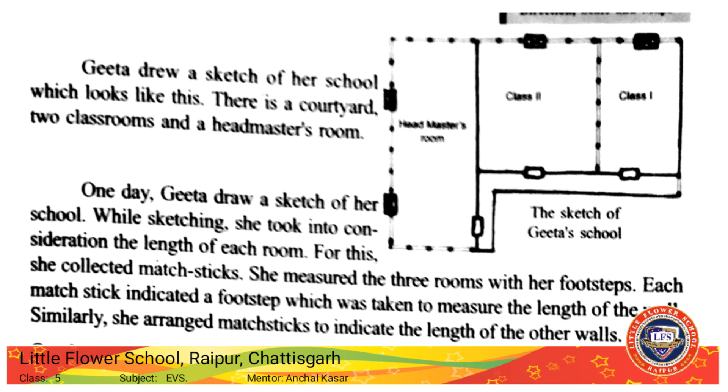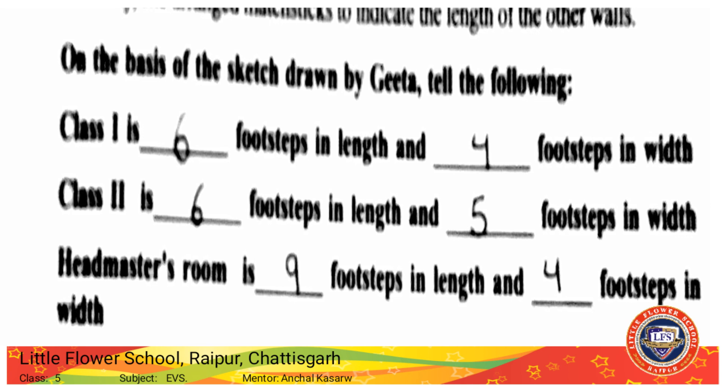Carefully see the sketch and the matchsticks. On the basis of the sketch, note the following: Class 1 is 6 footsteps in length and 4 footsteps in width. Class 2 is 6 footsteps in length and 5 footsteps in width. The headmaster's room is 9 footsteps in length and 4 footsteps in width. We get these footstep counts by counting the number of matchsticks used by Gita to measure the length of each wall.